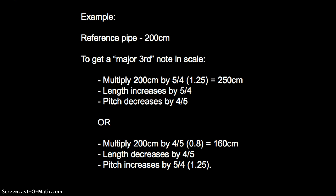So here's an example. If my reference pipe was 200 centimeters, if I was starting with a 200 centimeter length and I needed to get a major third, I wanted to make a major chord with a major third in the scale, I could just multiply 200 centimeters by 5 fourths, which is 1.25 to get 250 centimeters long. That would increase my length by 5 fourths, and it would decrease my pitch by 4 fifths. So if the length gets longer, the pitch is going to go down. Now, if I wanted to use shorter lengths, I could just multiply 200 centimeters by 4 fifths. So doing it the other way around, you get 160 centimeters. My length then would decrease by 4 fifths, and my pitch would increase by 5 fourths. So my pitch would go up.